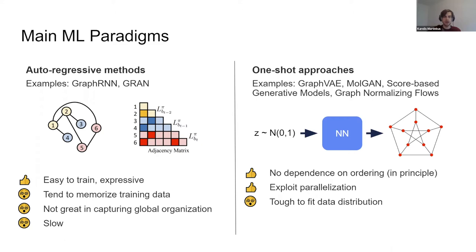Autoregressive models are not necessarily great at capturing global structure. For example, if you train them to generate grids and ask them to generate a different grid not seen during training, it will likely produce something like a grid plus some unfinished columns — which is no longer a rectangular graph, but locally kind of like a grid.